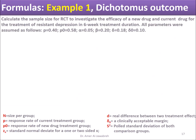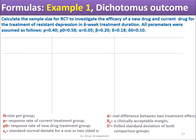Example 1 — dichotomous outcome: Calculate the sample size for an RCT to investigate the efficacy of a new drug versus current drug for the treatment of resistant depression. Assuming P = 0.4, P0 = 0.58, alpha = 0.05, beta = 0.20, delta = 0.18, and delta = 0.1.